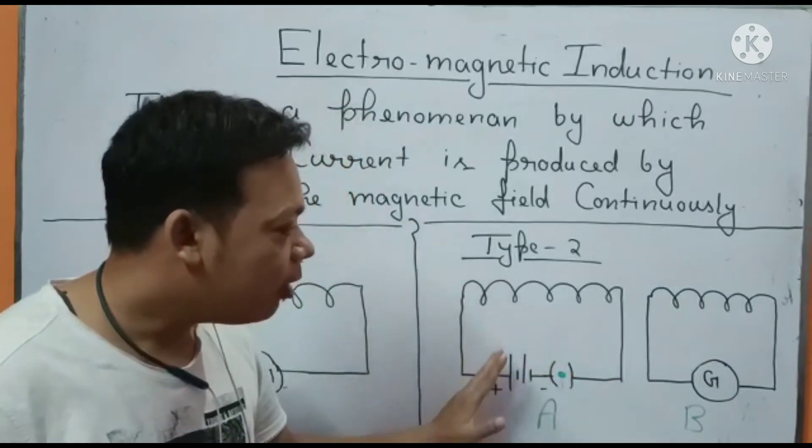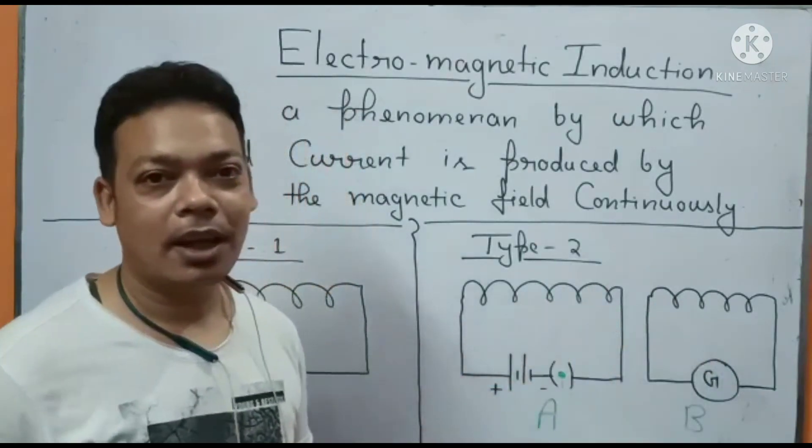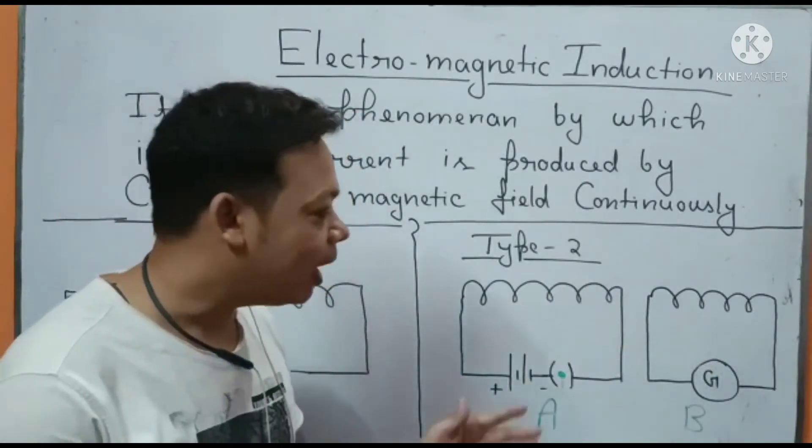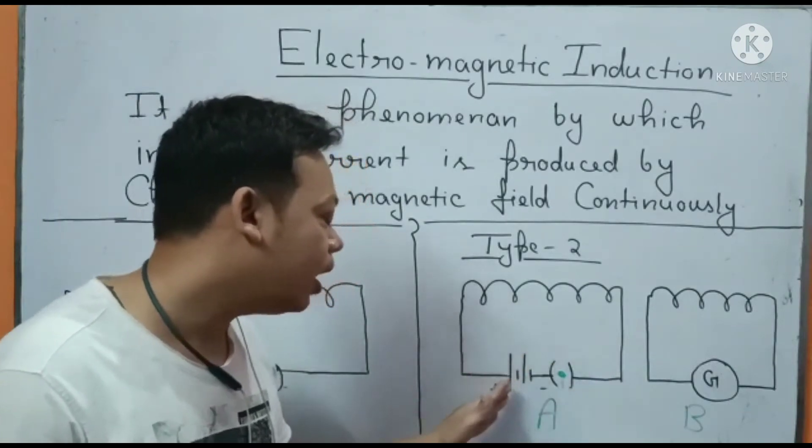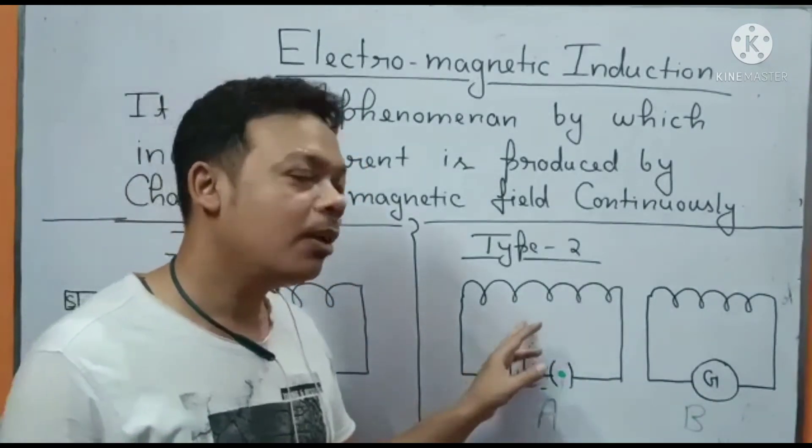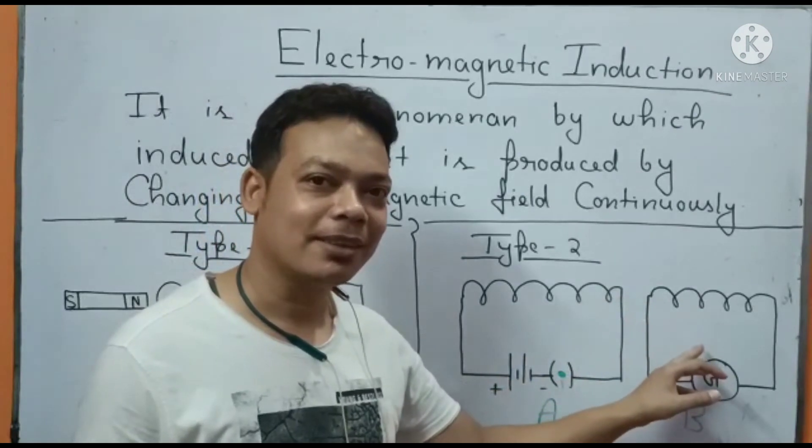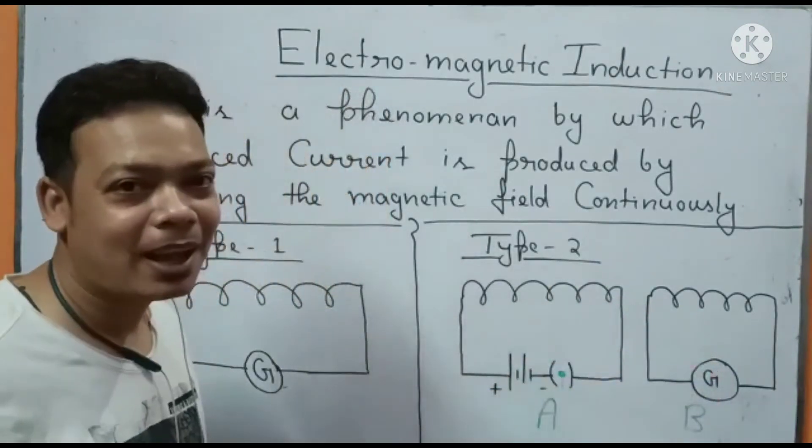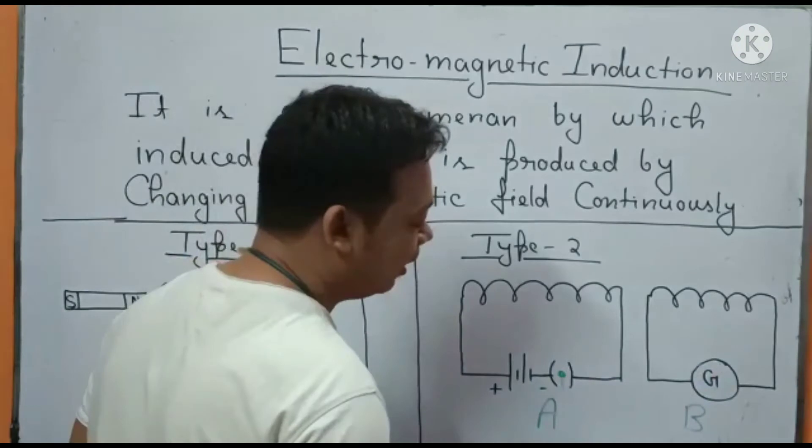Between coil A and coil B there is no connection. When current was being produced here because there is a battery connected, it's not like it went there by WiFi or Bluetooth.